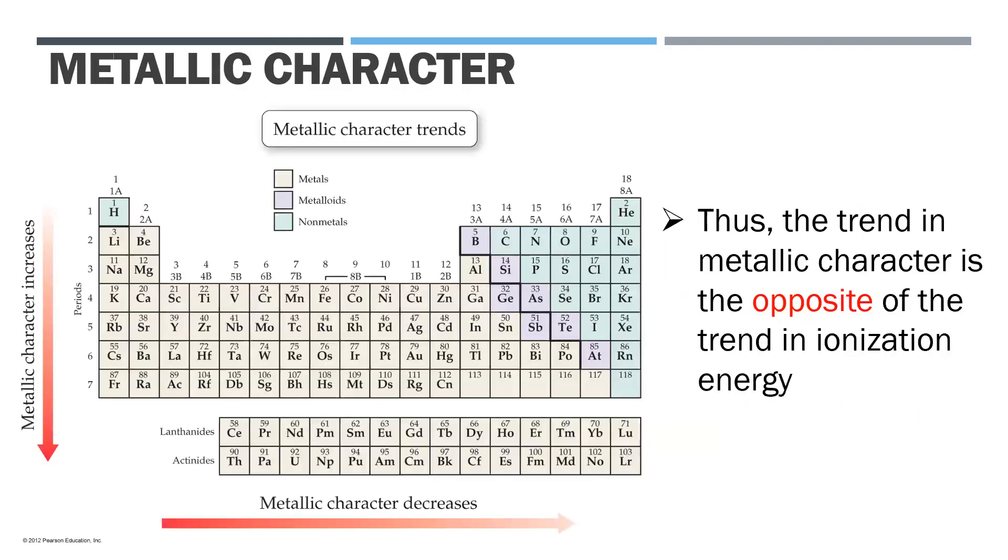So if we do that, we remember the biggest atoms with the least ionization energy are in the lower left hand corner, and the smallest atoms are in the upper right.